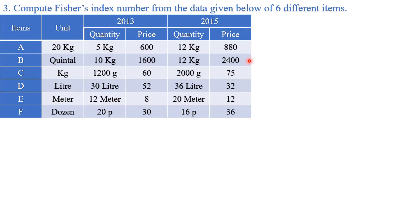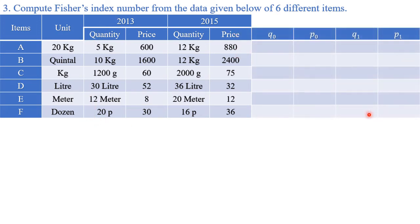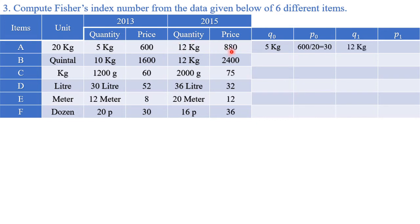I am going to redraw the four columns: q0 (base year quantity), p0 (base year price), q1 (current year quantity), p1 (current year price). I will convert item by item. For the first item, unit is 20 kg: quantity stays as 5 kg, but price 600 per 20 kg becomes 600/20 = 30 rupees per kg. Similarly, 880 per 20 kg becomes 880/20 = 44 rupees per kg.